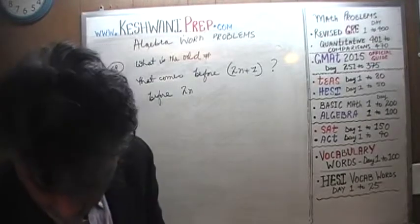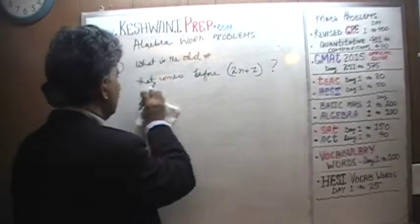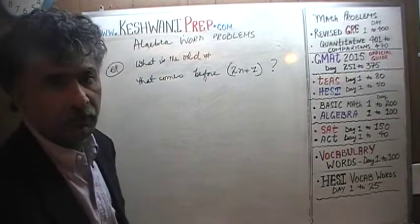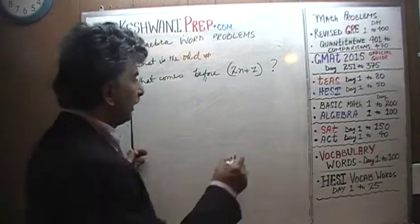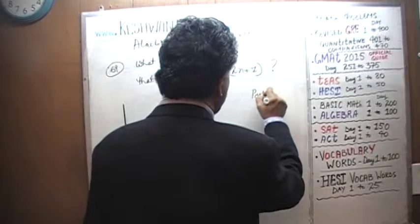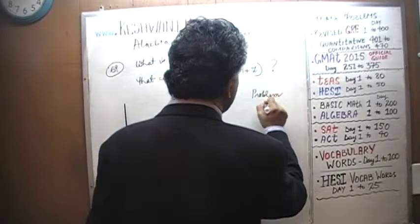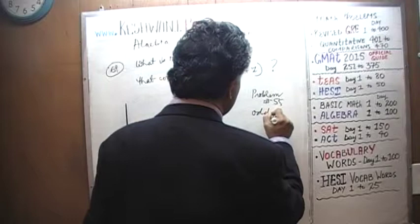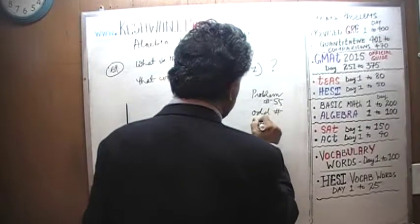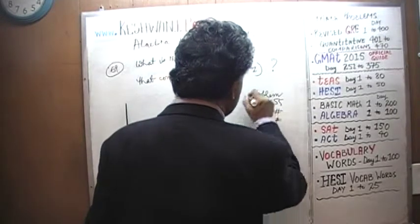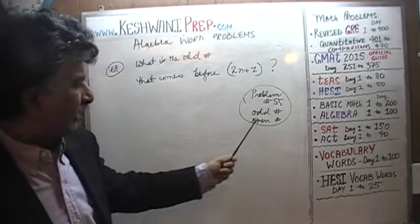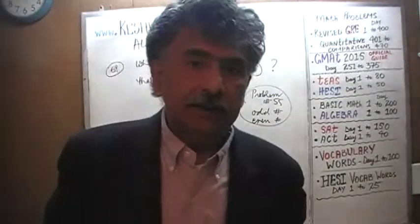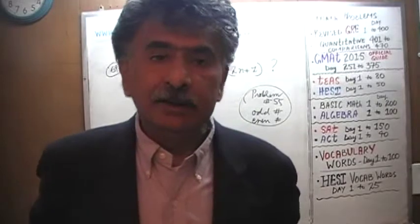Now if you recall, if you have been watching these videos in the proper sequence, in problem number 55 we learned how to express the notion of an odd number and an even number in the language of algebra.